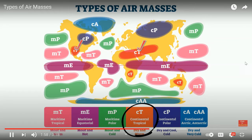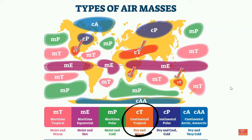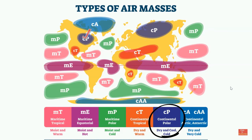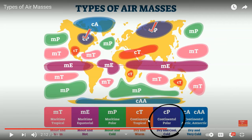Continental tropical air masses are warm and dry — abbreviated lowercase c, capital T. Continental means formed over land, so it's dry; tropical means warm. They are colored orange and are found above and below the equator where it is hot. A continental polar air mass will be cold and dry. Continental will always be dry; polar will always be cold. Think of the first part of an air mass name as dry or moist, and the second part as cold or warm. Continental polar air masses are dark blue on this diagram.